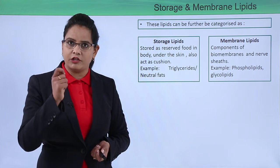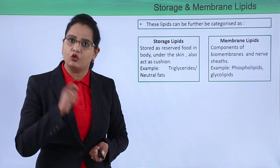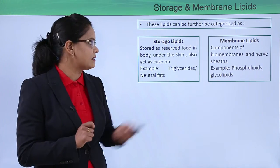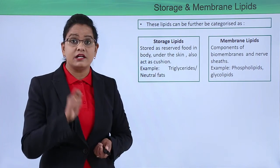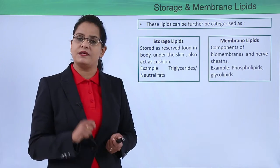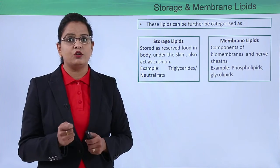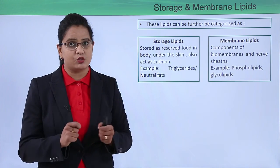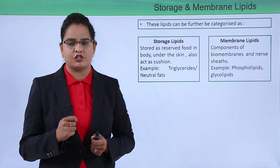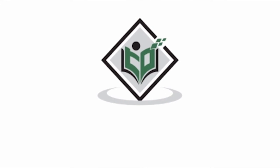Membrane lipids are those present in biomembranes; they can also be found in nerve sheaths. Examples of membrane lipids are phospholipids and glycolipids. This was all about types of lipids. In the next video, we will take up individual lipids and study their structure and function. Thank you very much — Tutorials Point, Simply Easy Learning.